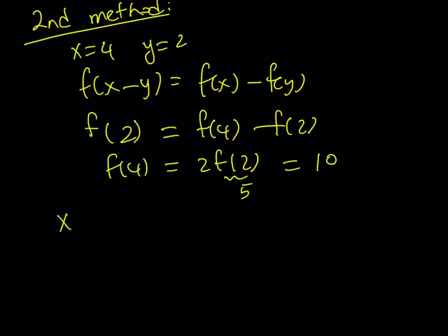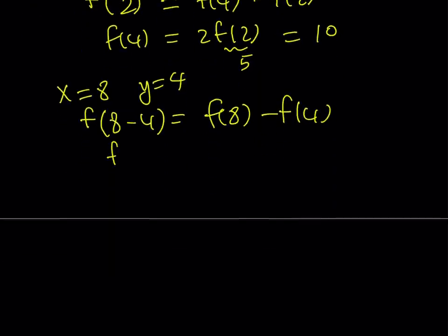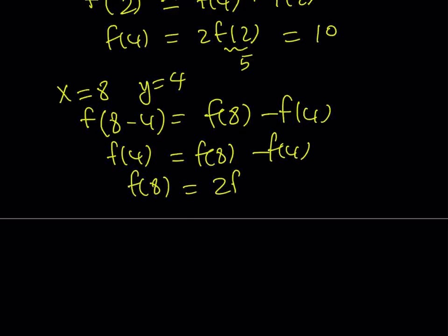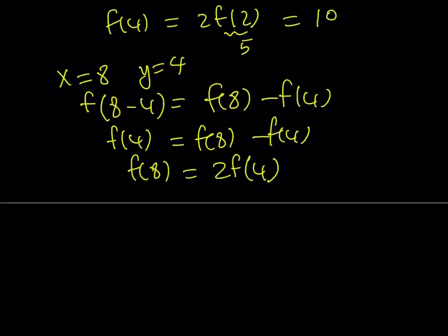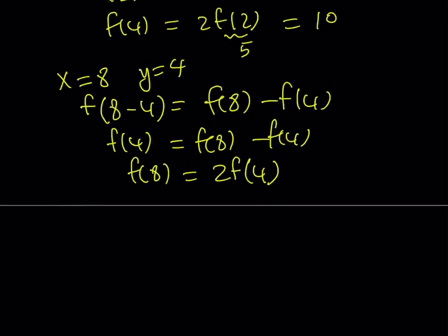You probably know the next step. I'm going to replace x with 8 and y with 4. In other words, I'm just trying to double everything. Notice that this is f of 4 equals f of 8 minus f of 4. This means that f of 8 is equal to 2 times f of 4. You can definitely generalize this for integers, for powers of 2, for rational numbers, so on and so forth. From here, we get that f of 8 is equal to 2 times 10, which is 20.